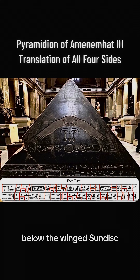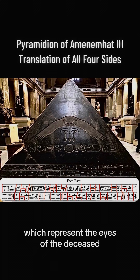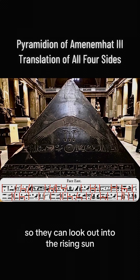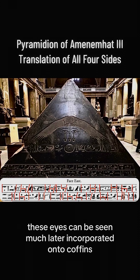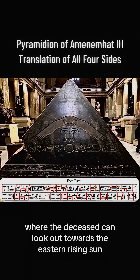Below the Winged Sun Disc, you have two eyes, which represent the eyes of the deceased so they can look out into the rising sun. These eyes can be seen much later incorporated onto coffins, where the deceased can look out towards the eastern rising sun.